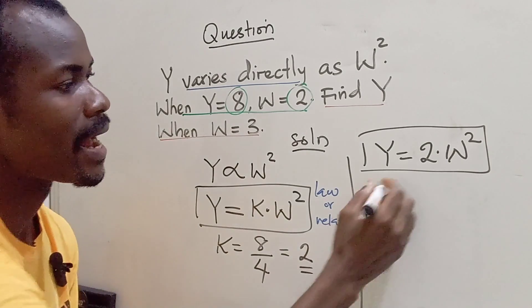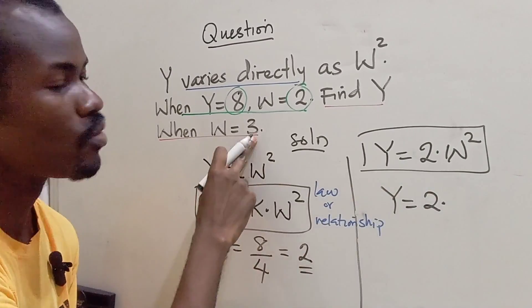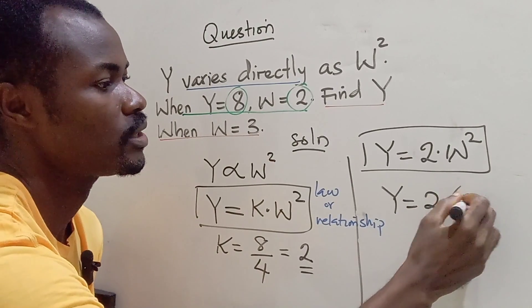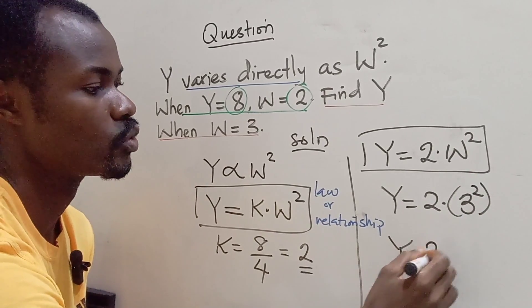So to find Y, which equals 2 times, we are going to substitute W as 3. So W is 3 squared. So our Y equals 2.